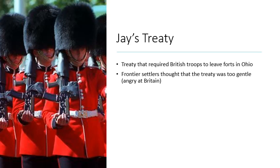Federalists were also successful in passing a treaty with the British known as Jay's Treaty. John Jay, the first Chief Justice of the Supreme Court, negotiated this treaty in 1795 in the midst of the French Revolutionary Wars. It settled differences that had existed since the end of the Revolutionary War and required British troops to leave forts in Ohio. However, frontier settlers thought the treaty was too gentle on the British, feeling the American government was giving in to British demands.